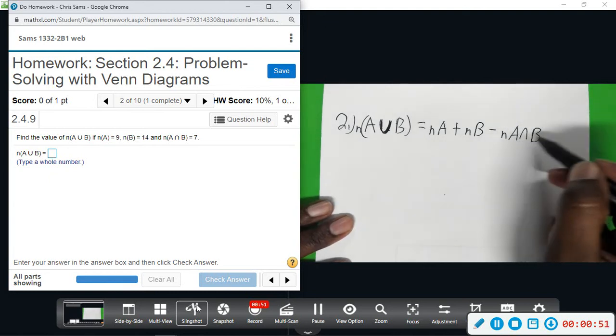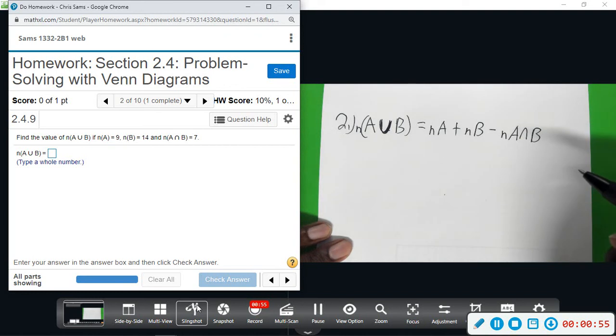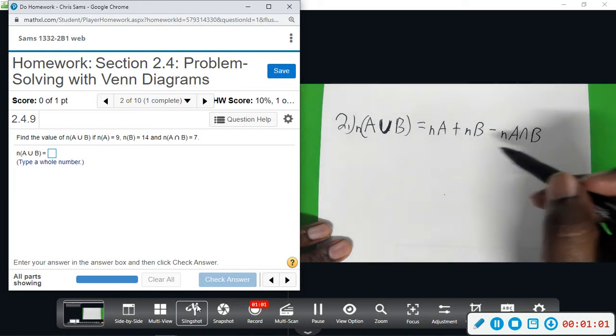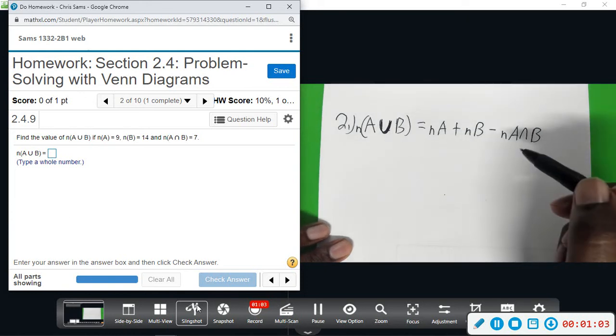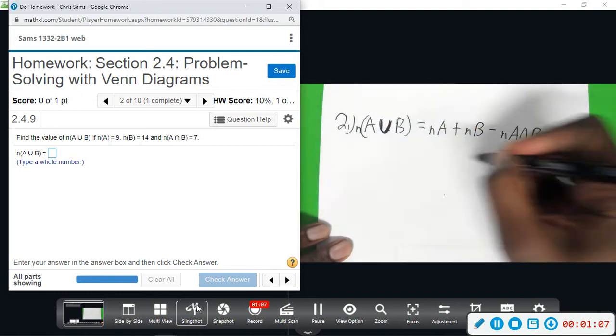Now, we will use this formula when we don't see the Venn diagram in such a way that the parts of A and B overlapping, we can't tell which one is which. So, here's why this formula has come about.